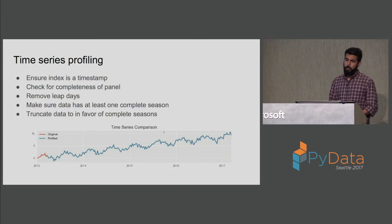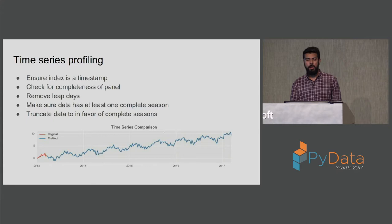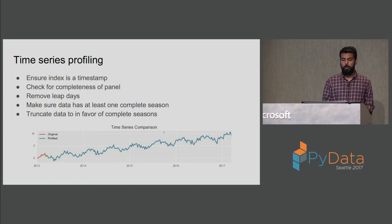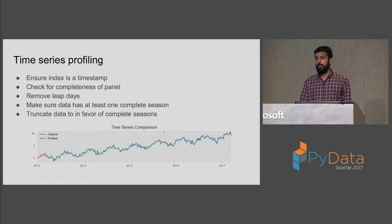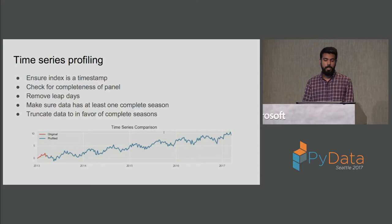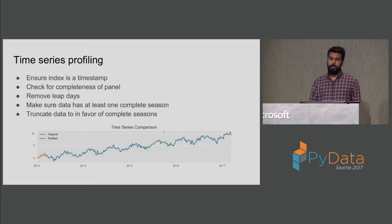Now let's look at different steps we can perform to pre-process time series data. The very first step is to profile the data — make sure the index is of type timestamp, check for completeness of panel, and fill null values on days where we don't see transactions. One important thing if dealing with daily data: since the frequency for daily data is 365, just remove the leap days. If your data has seasonality, make sure before any forecasting that it has at least one complete season, and also truncate any incomplete season.